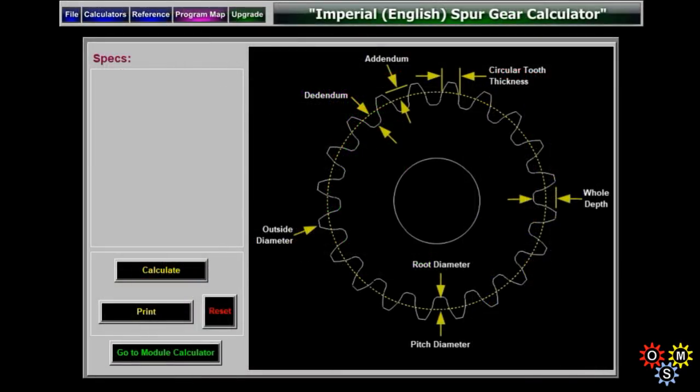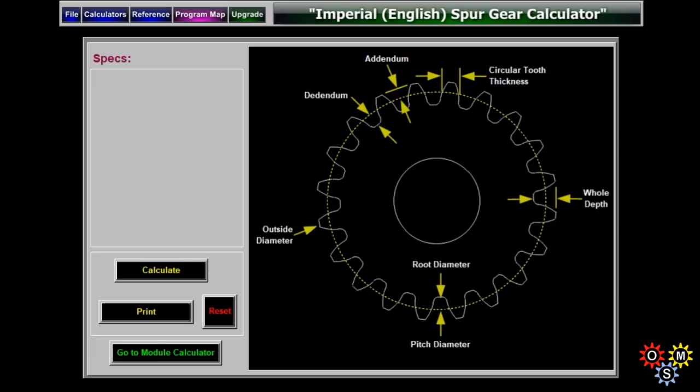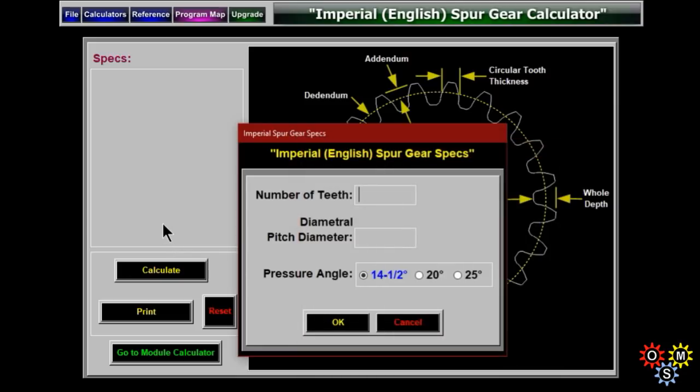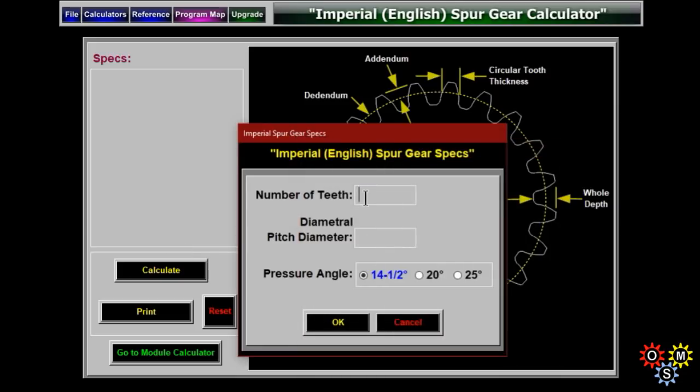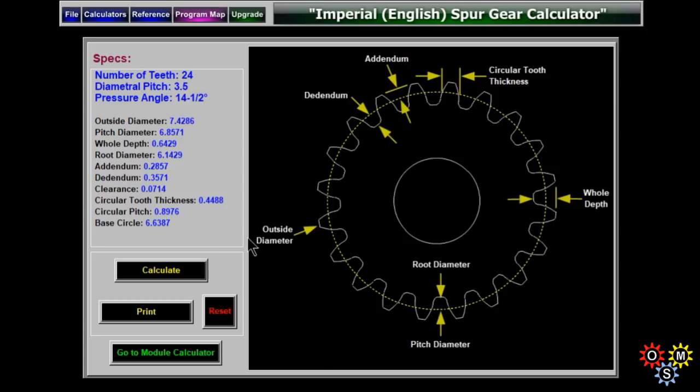Moving on now to the spur gear calculator. Very, very useful indeed. There are lots of dimensions that are really critical when it comes to gear cutting. And if we go to calculate, we can put in number of teeth, which we'll say is something simple like 24. And diametral pitch diameter, 3.5. 14.5 pressure angle, pretty common.